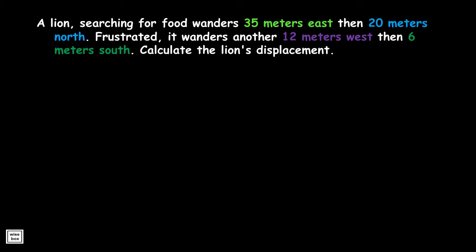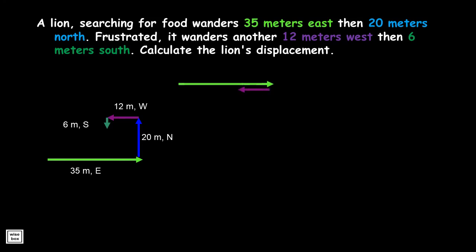Let's try this one. A lion searching for food wanders 35 meters east, then 20 meters north, then another 12 meters west, then 6 meters south. Calculate the lion's displacement. Drawing the vectors: first vector 35 meters east, second vector 20 meters north, third vector 12 meters west, last vector 6 meters south. There are two horizontal vectors in opposite directions, so we subtract them — resultant is 23 meters east. There are two vertical vectors also in opposite directions, so we subtract them — resultant is 14 meters north.